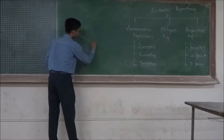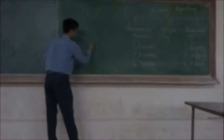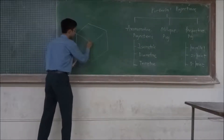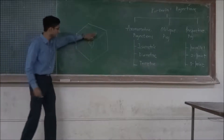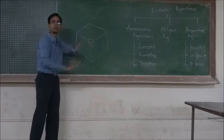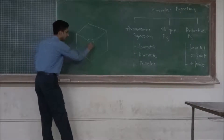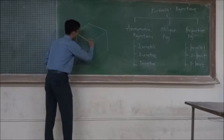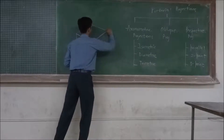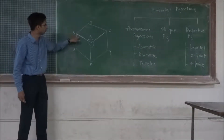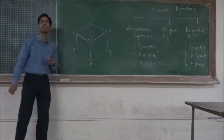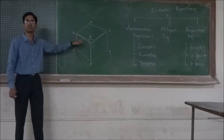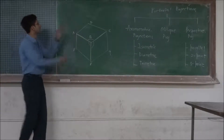We draw a very common diagram. We have seen that three angles are visible. In the isometric, this cube is drawn in isometric projection. These three edges — AP, BC, and HBF — are the important edges and they are called isometric axes.